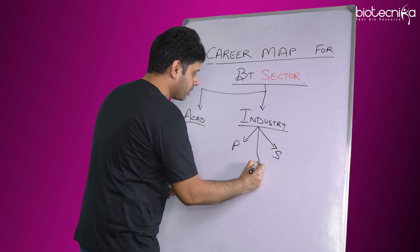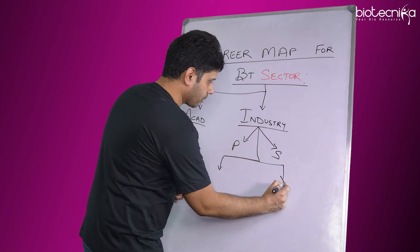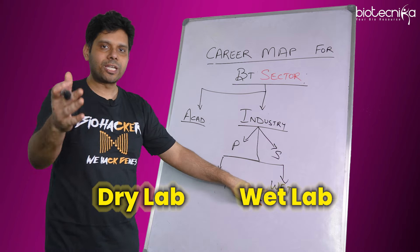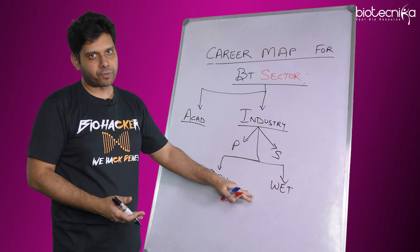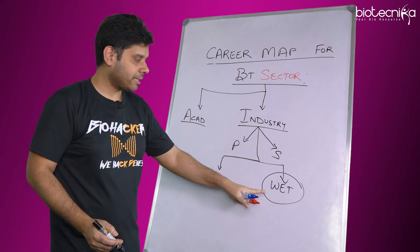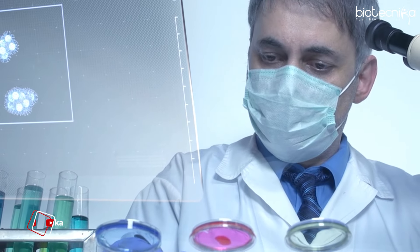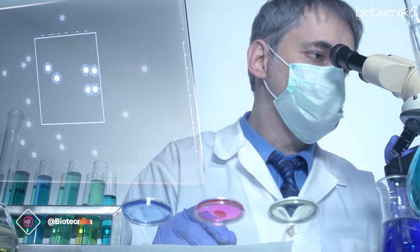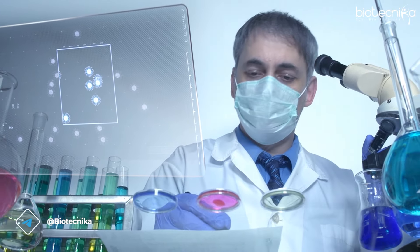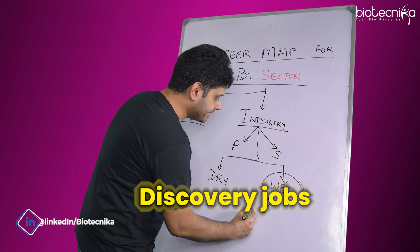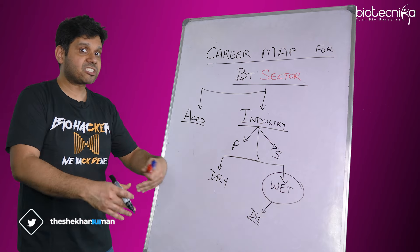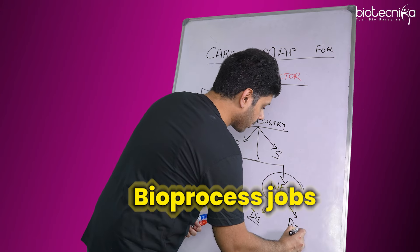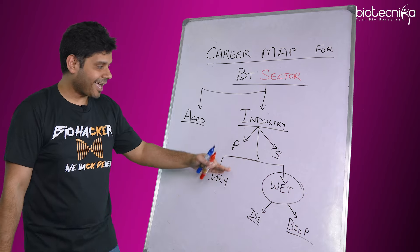The industry can be divided into two parts: dry lab and wet lab. Wet lab was the only thing available 20 to 25 years ago, so it is a highly crowded market. It requires molecular biology, biochemistry, and microbiology skills, and you have to be physically present in the lab. In wet lab, two types of jobs are available: discovery jobs — doing something that has never been done before — or bioprocess jobs, where you work within an existing process.